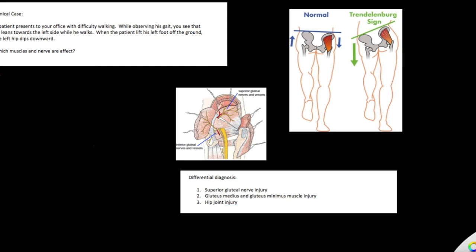I will give you a clinical case scenario and we can discuss the nerve injury associated with this case. A patient presents to your office with difficulty walking. While observing his gait, you see that he leans towards the left side while he walks. When the patient lifts his left foot off the ground, the left hip dips downward. So which muscles and nerve are affected?